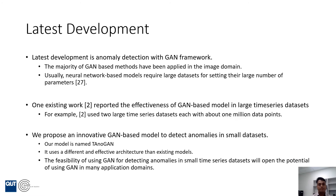The latest development in deep learning models is GAN-based models. However, the majority of GAN-based models are applied in the image domain. Neural network based models usually require large datasets for setting their large number of parameters. One existing research reported the effectiveness of GAN-based models on large time series datasets — for example, they used two large time series datasets each with 1 million data points.